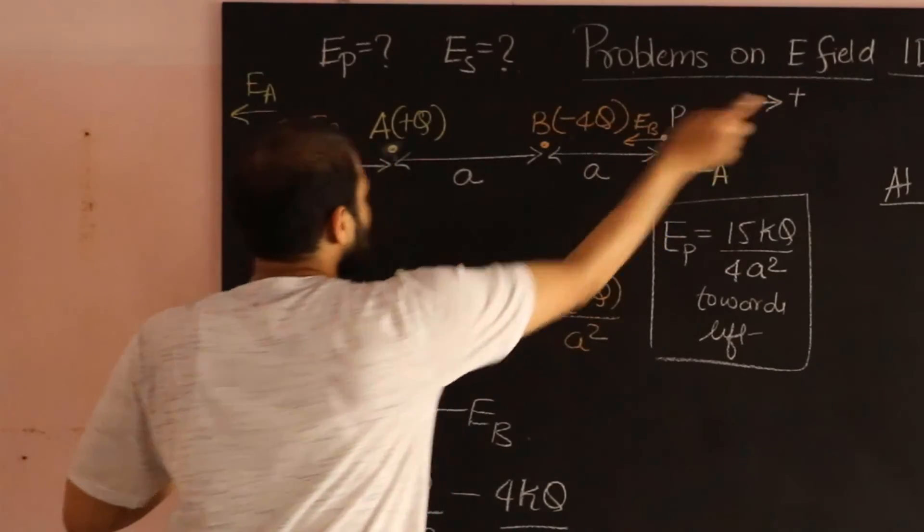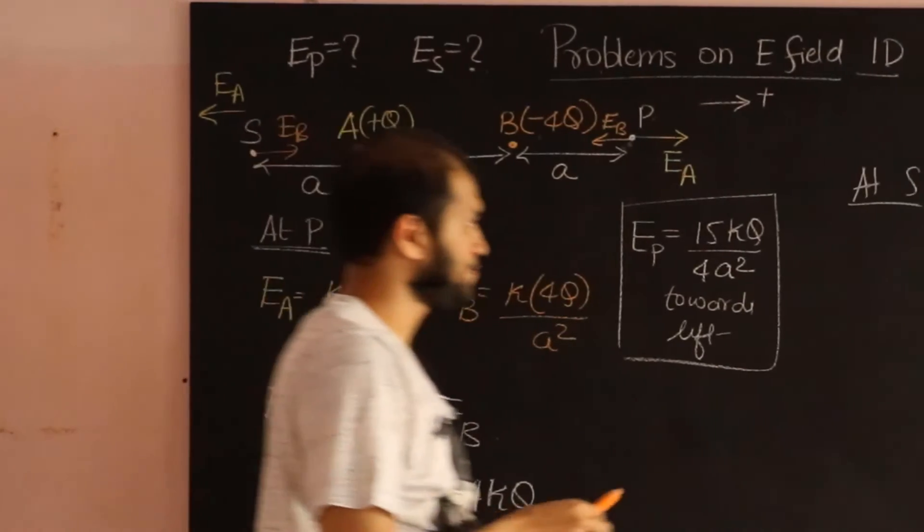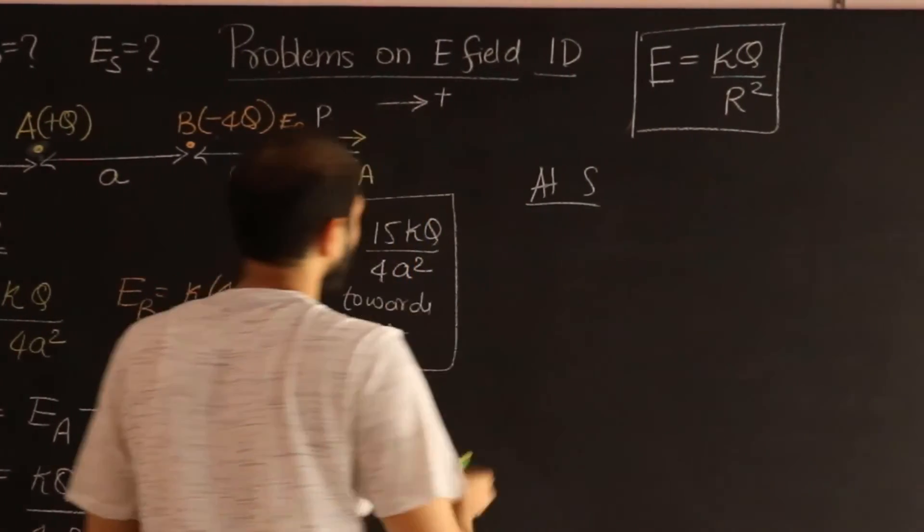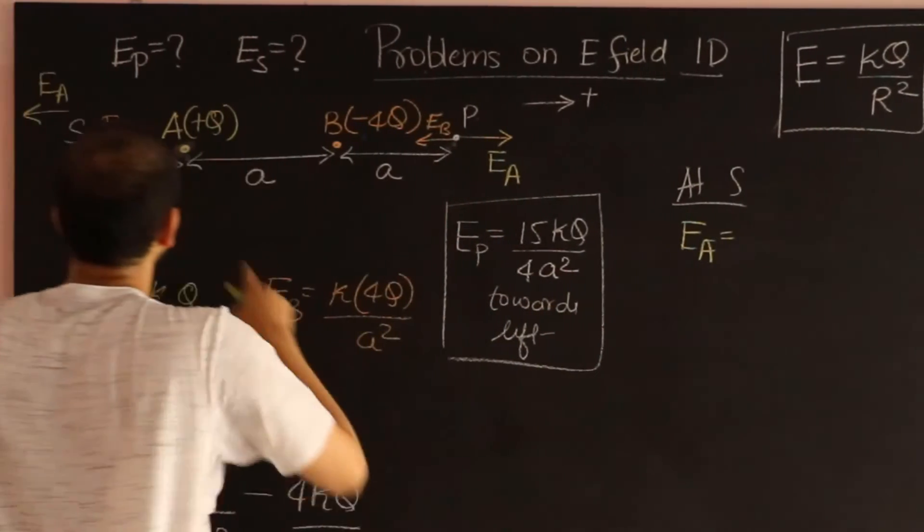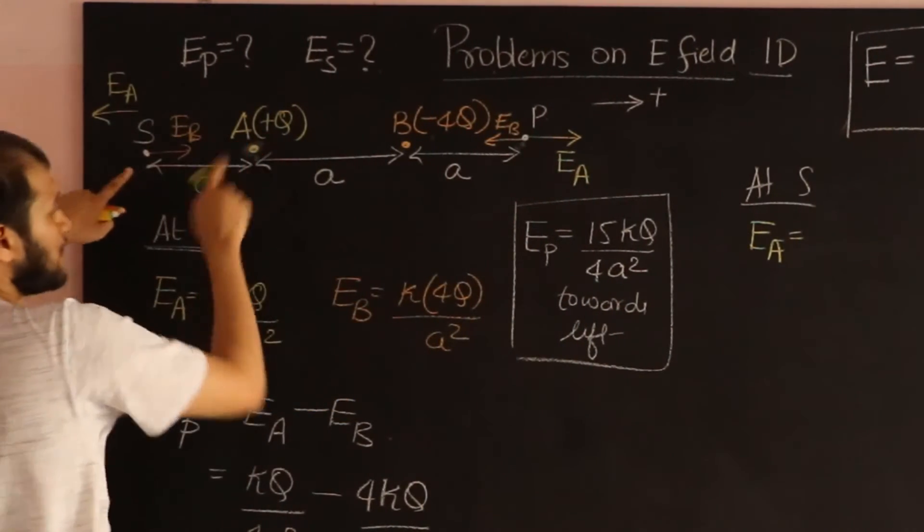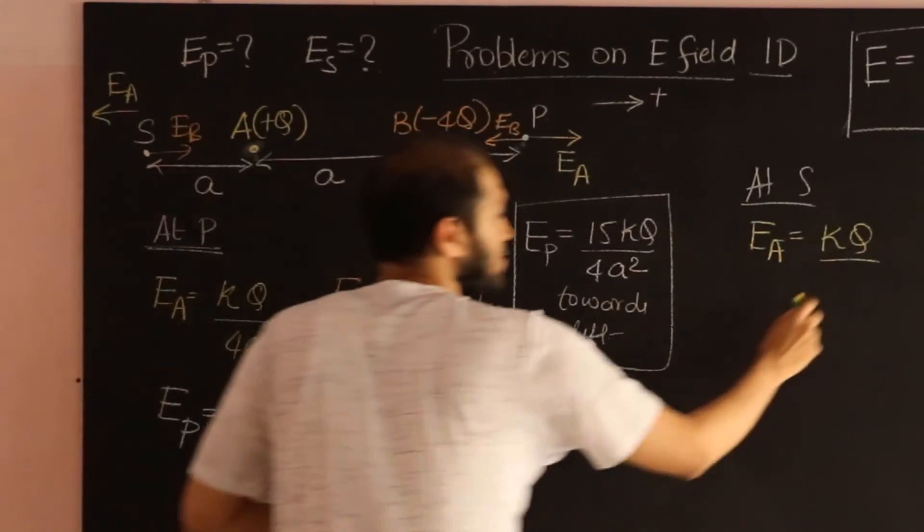Notice, according to my sign convention, E_A is now negative, and according to my sign convention, E_B is positive. So let's calculate E_A. That's going to be k into q divided by this distance squared. So that's A squared.